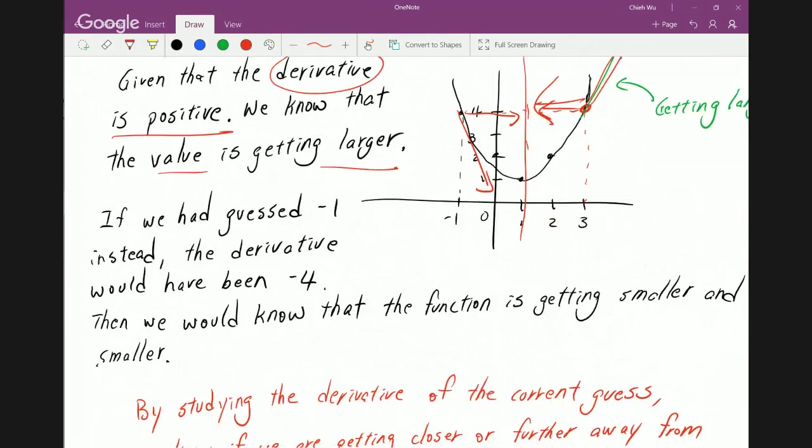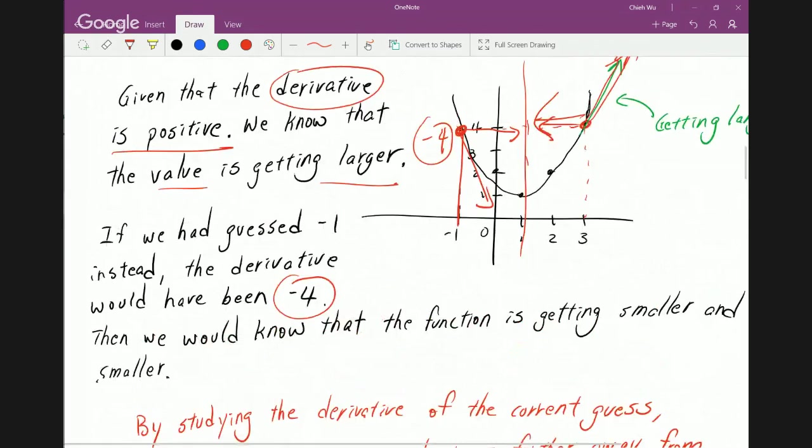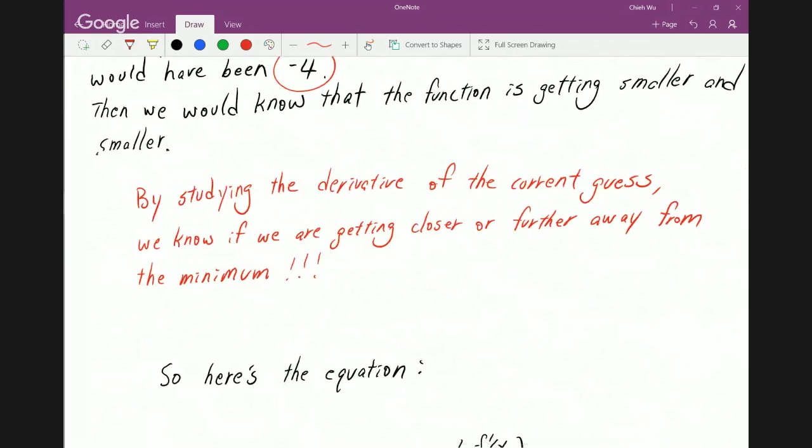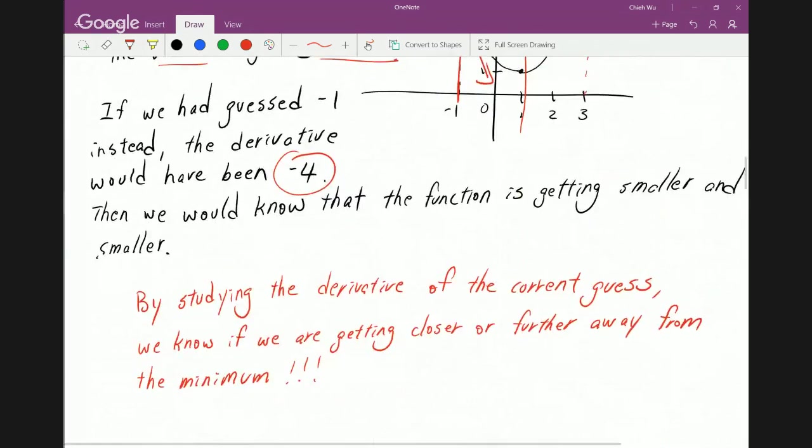Now, remember, if we had guessed negative 1 instead, we'll get a slope of negative 4. Now, if the slope is negative 4, then we want to go forward. I need to repeat this again because we really need to hammer this into your head that the derivative tells us the direction whether we're getting warmer or colder to the actual answer based on the initial guess.